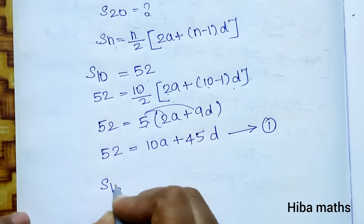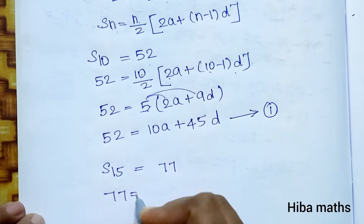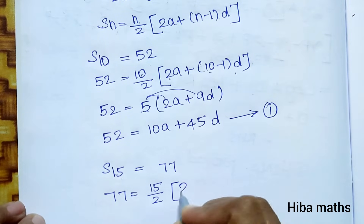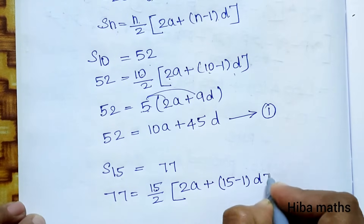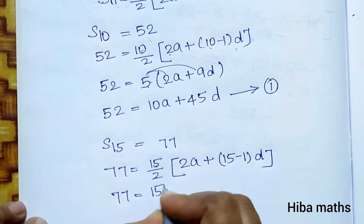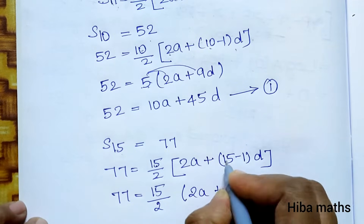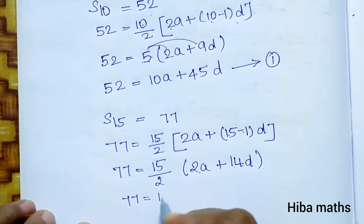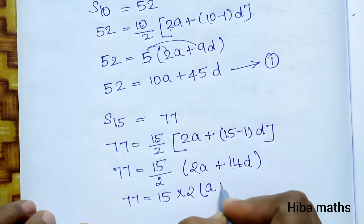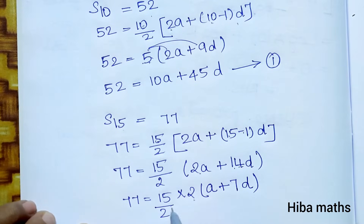Next, S(15) is equal to 77. So 77 is equal to 15 by 2 into 2a plus 15 minus 1 into d. Simplifying inside: 2a plus 14d, and we divide by 2, so 77 is equal to 15 into a plus 7d.